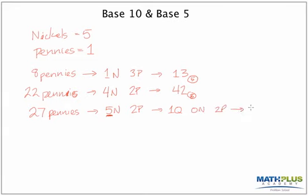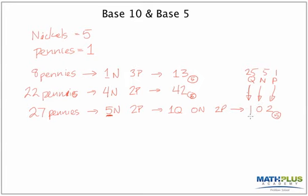So in base five, I write twenty-seven as one, zero, two — which is in base five. This becomes my quarters column, or my twenty-fives column; this is my nickels or fives column; and this is my pennies or ones column. The analogy to base ten is still there: I have a units column, a fives column, and when I get to five sets of five I create a twenty-fives column. In base ten, we'd call that the hundreds — ten sets of ten is a hundred. Same thing here.